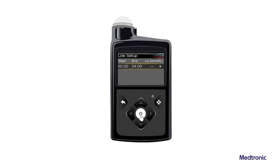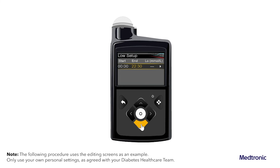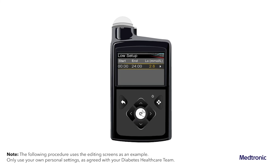Select the Time Segment. The End Time flashes. The start time of the first time segment is always midnight. Up to 8 time segments can be set, each with a different low limit. All the time segments must add up to a 24-hour period. Set the End Time. Set the Low Limit from 2.8 mmol per litre to 5.0 mmol per litre in increments of 0.2 mmol per litre.